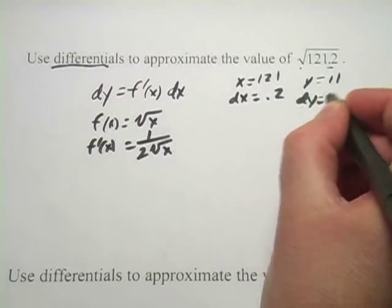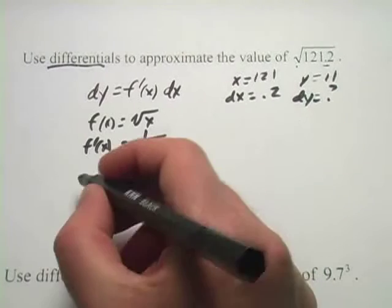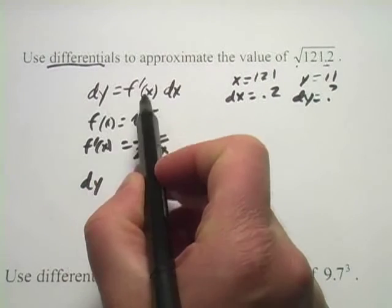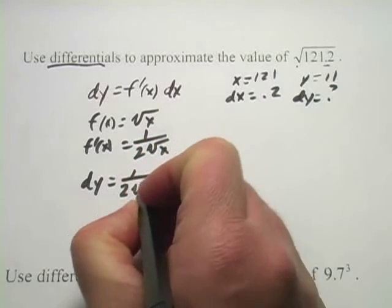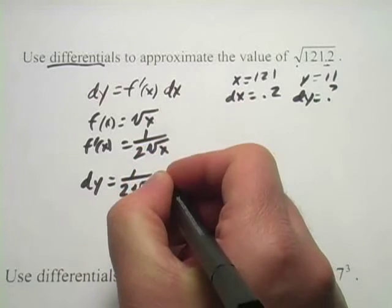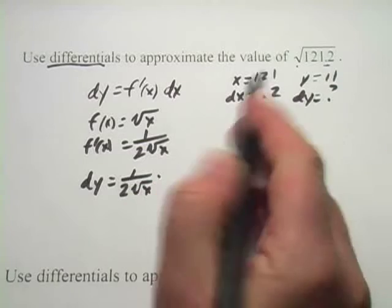dy, what's dy? That's what we want to know. Well, dy is the derivative of the function, so 1 over 2 times the square root of x times dx, and dx, that's 0.2.